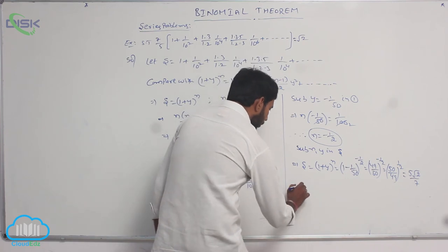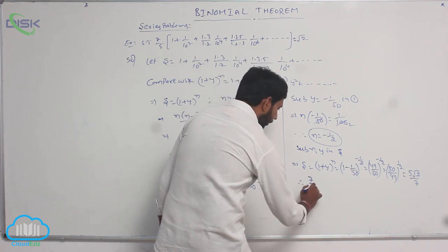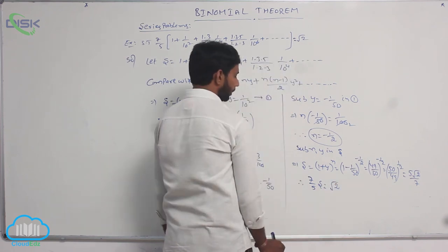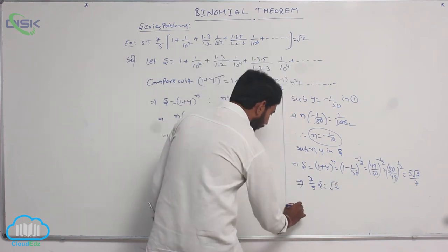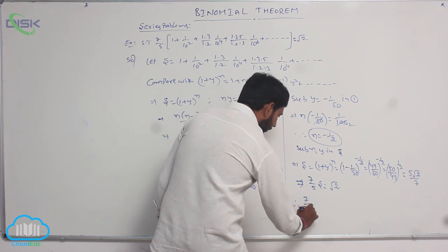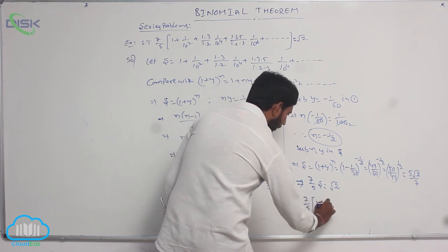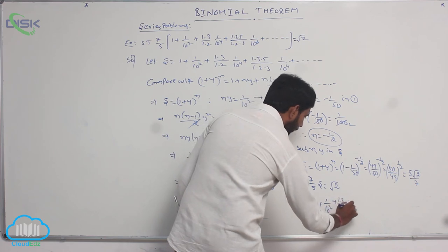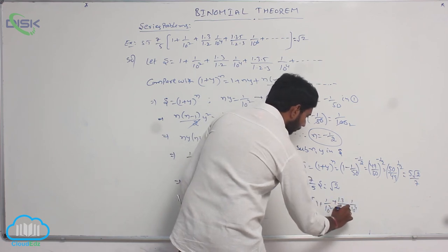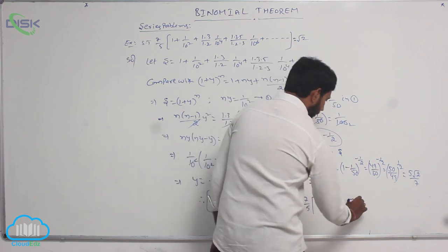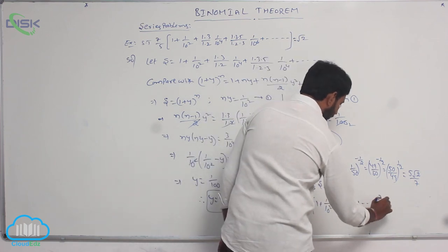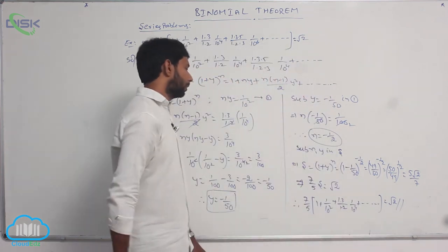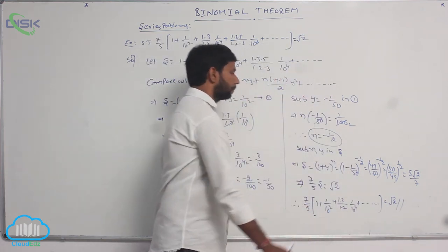Multiply both sides by 7/5. Therefore, 7/5 × S = √2. That is, 7/5 × (1 + 1/10² + (1·3)/(1·2)·1/10⁴ + ...) = √2. The value of the given series is √2.